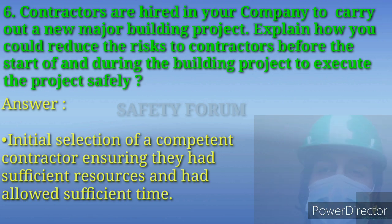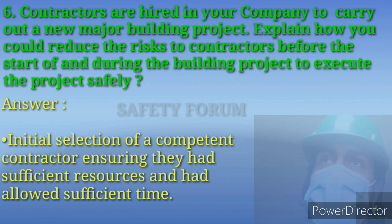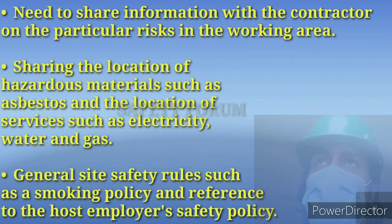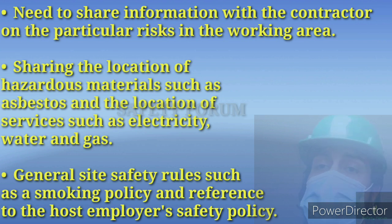The initial selection of a competent contractor must be done, ensuring they have sufficient resources and have been allowed sufficient time. All resources and documents need to be checked. You need to share information with the contractor on the particular risks in the working area, including the location of hazardous materials such as asbestos, and the location of services such as electricity, water, gas, and other pipes.